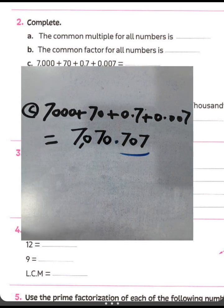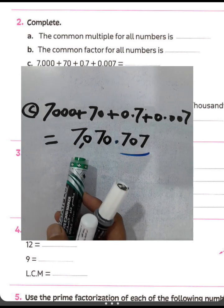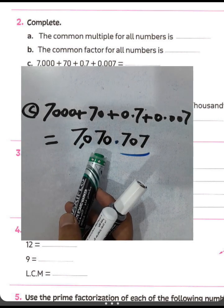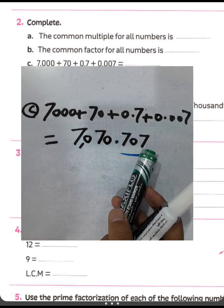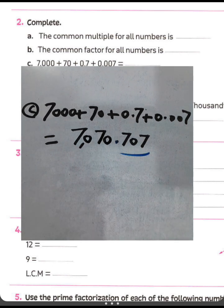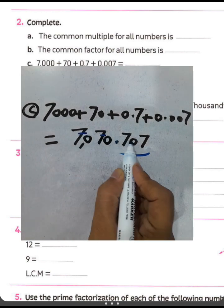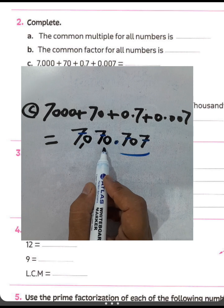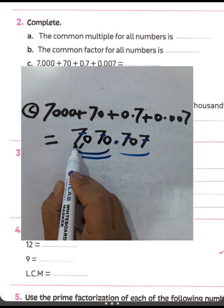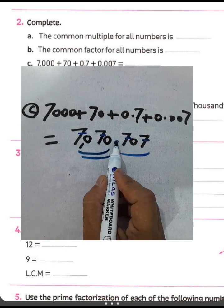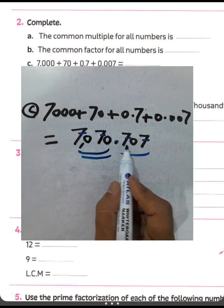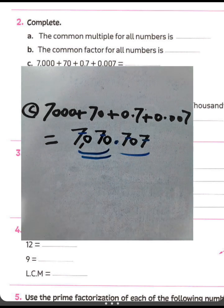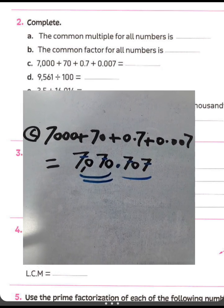Students, read this number together: seven thousand, seventy, and seven hundred seven-thousandths. We call it seven thousand seventy and seven hundred seven-thousandths. Question letter D.